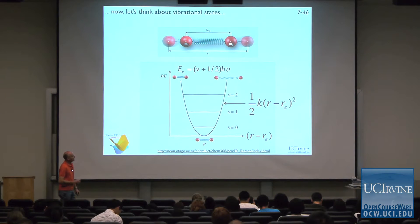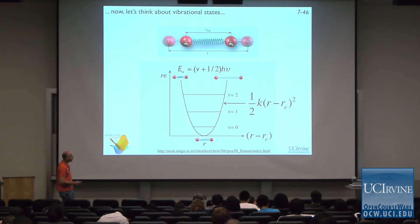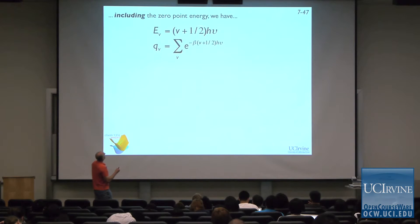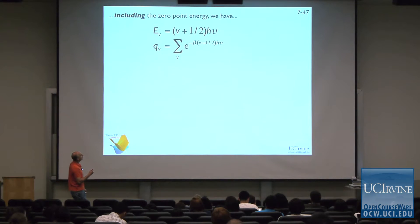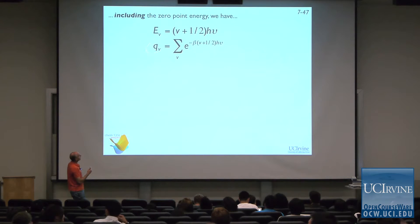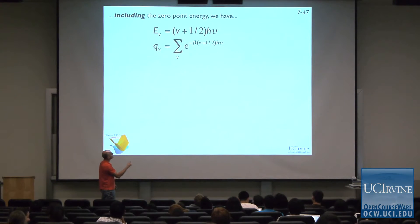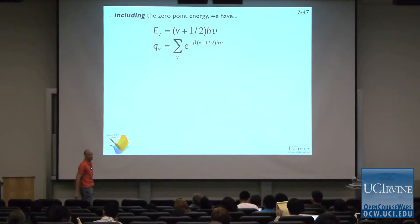Now, vibration. Remember way back when we were talking about the harmonic oscillator — here's the harmonic potential, one-half k(R − R_e)². Everyone remember Hooke's Law? The energy levels are evenly spaced: (v + ½)hν, where v is the vibrational quantum number. We have our normal expression for the partition function — we just plug this energy in and we've got the partition function. It always works this way. This is always the expression for the partition function whether we're talking about translation, rotation, or vibration.